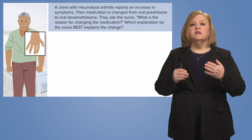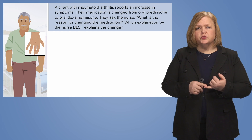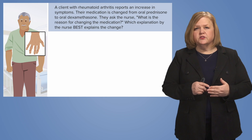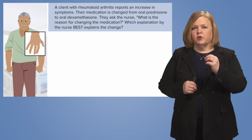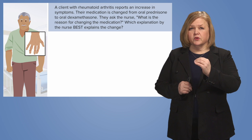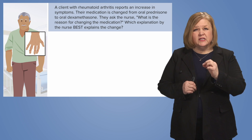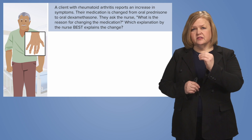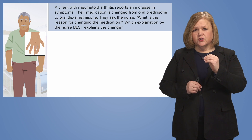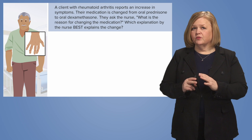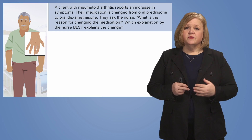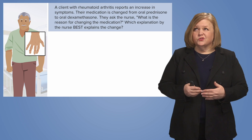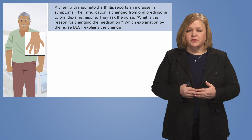Starting at the top: a client with a diagnosis — rheumatoid arthritis. Think quickly about what the problems are for that patient. Then it says 'reports' — that has to be really important to the question. An increase in rheumatoid arthritis symptoms is not what we want, so we have abnormal findings and we know we're going to need to do something. Just documenting would not be the best action.